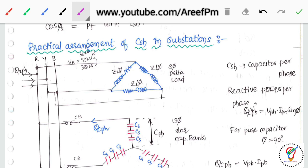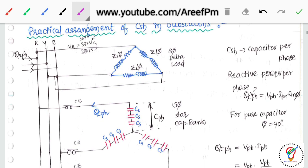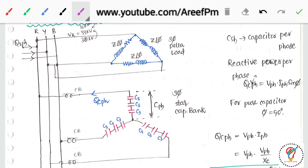After 9 PM, loads switch off and the voltage can boost up to 36 kV because we are injecting more reactive power than required. This overvoltage causes insulation problems and can damage windings. To avoid this, we open the circuit breakers to withdraw the reactive power support, restoring the system to its normal voltage.